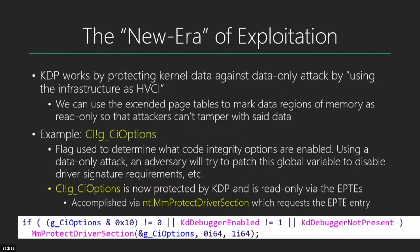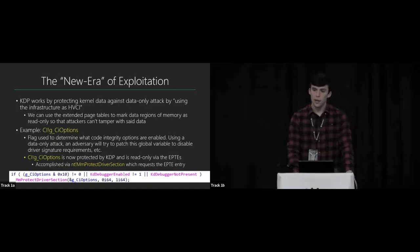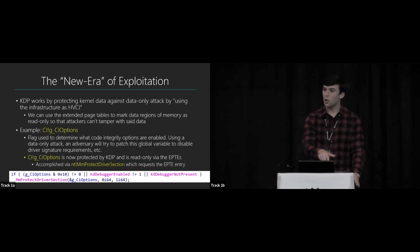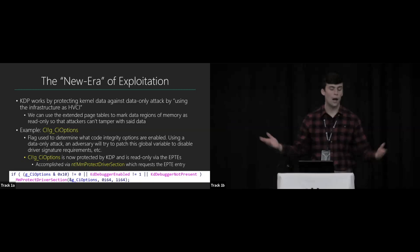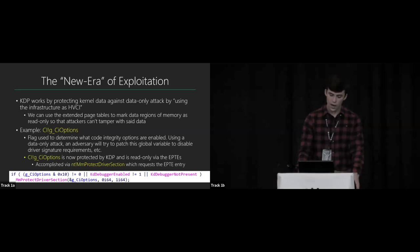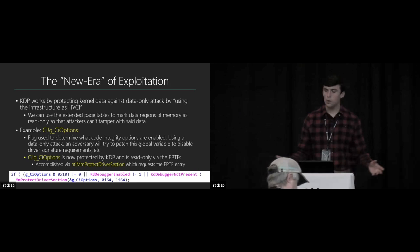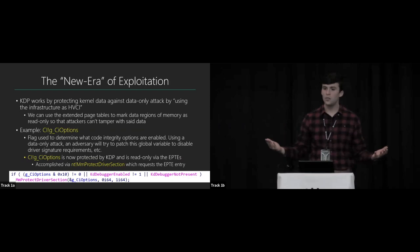Kernel Data Protection uses the same HVCI infrastructure to protect static and dynamic memory through Extended Page Tables. An example: CI_Options, a global variable in ci.dll managing driver signing requirements. With kernel access, an attacker could clear that bitmask to load their own drivers. KDP can protect this static global variable as read-only at the hypervisor level — so even corrupting Page Table Entries won't work. The new function mmProtectDriverSection enables this. Dynamic KDP only protects memory allocated into the secure pool — other dynamic data like process objects is not yet protected.